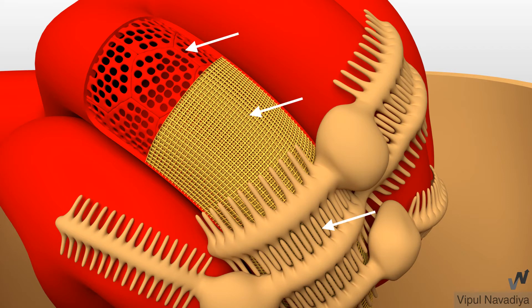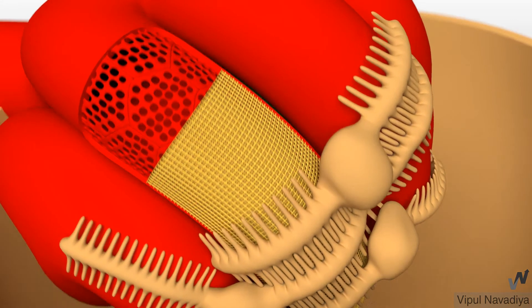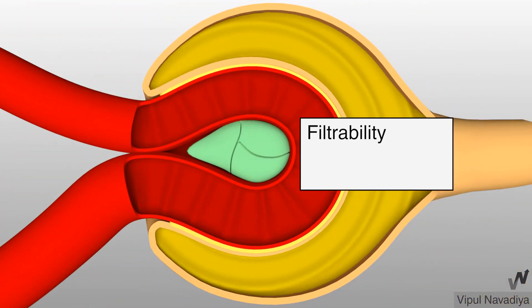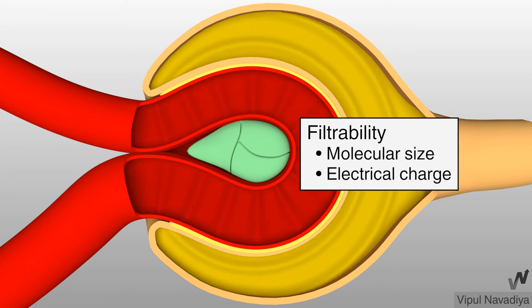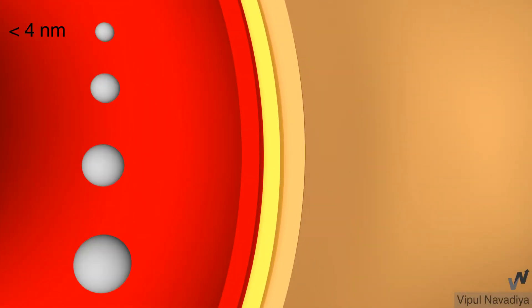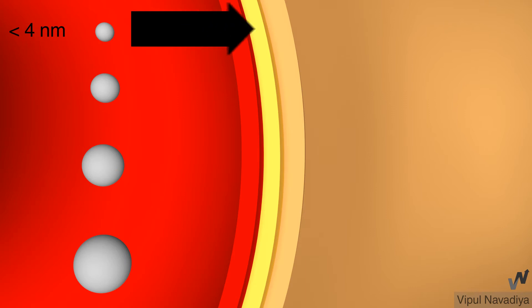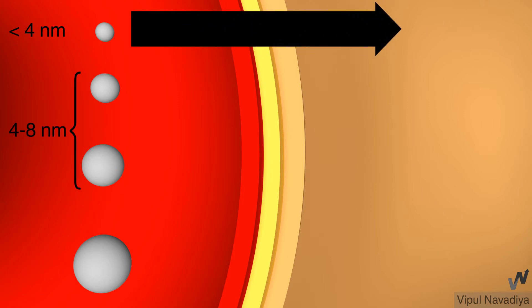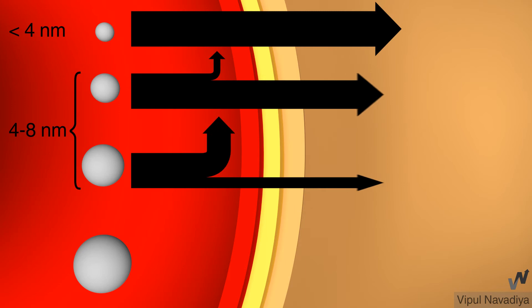Now although this filtration barrier is highly permeable, it does not allow free passage to all the blood constituents. Filterability of a particular substance depends on two parameters: its molecular size and electrical charge. Neutral molecules smaller than 4 nm in diameter are freely filtered. From 4 to 8 nm, filtration is inversely proportional to the size. The larger the molecule, the lesser the filtration. And molecules larger than 8 nm are highly restricted.